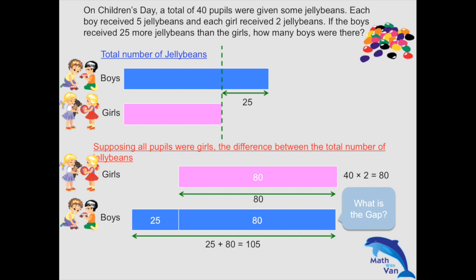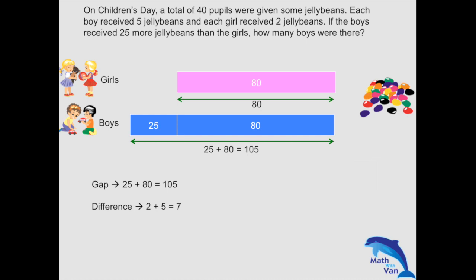So again, the same thing: I take out one girl and put in one boy, and the difference will drop by seven. So how many times do I have to do that — that is, how many girls to take out and how many boys go in? 105 divided by 7 equals 15 times, which is as good as saying 15 boys. So again, do a quick check. You see that at this point you only have three steps. But because you're starting from the different side of the question, you have to add 25 to 80. So the gap identified is different, but the rate — every time you take out one girl and put in one boy, the gap drops by seven — is the same as the previous scenario.